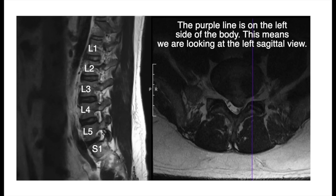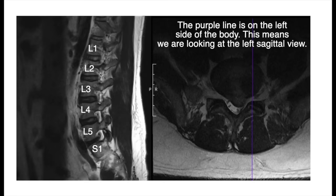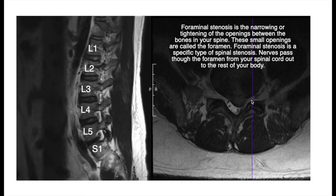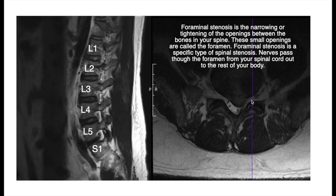If you look at the sagittal view here — looking at it from the side, specifically the left side — there's fat around the nerve, and the dark structure is the nerve. When there's a herniation at this level, this disc can press on that nerve — and that's called foraminal stenosis. This is where the nerve comes out of the spine and travels through the foramen. So that's foraminal stenosis.